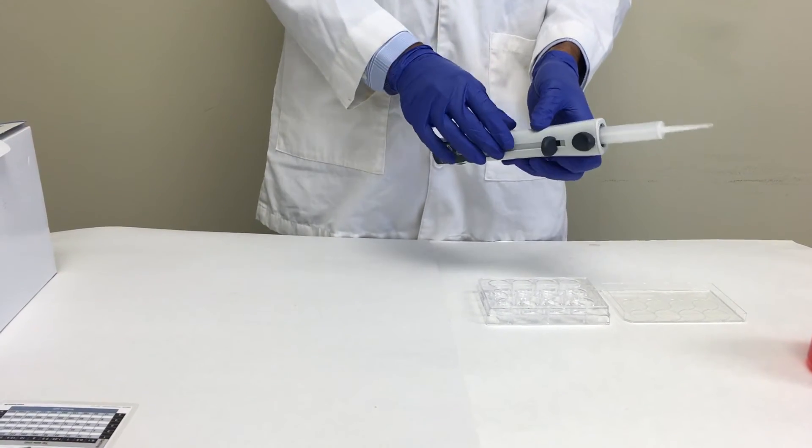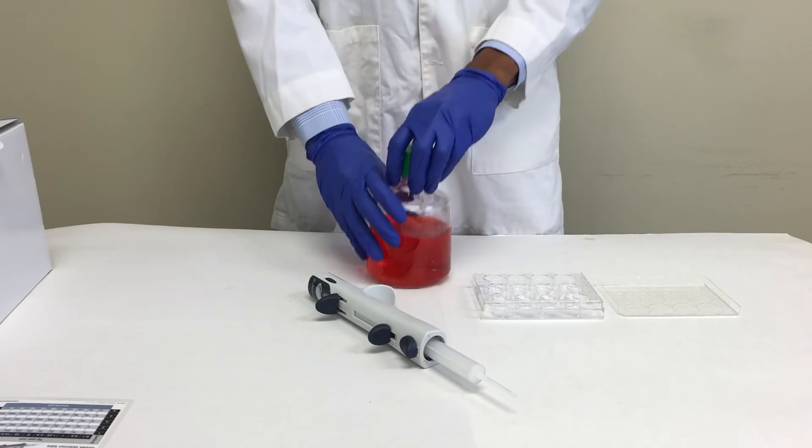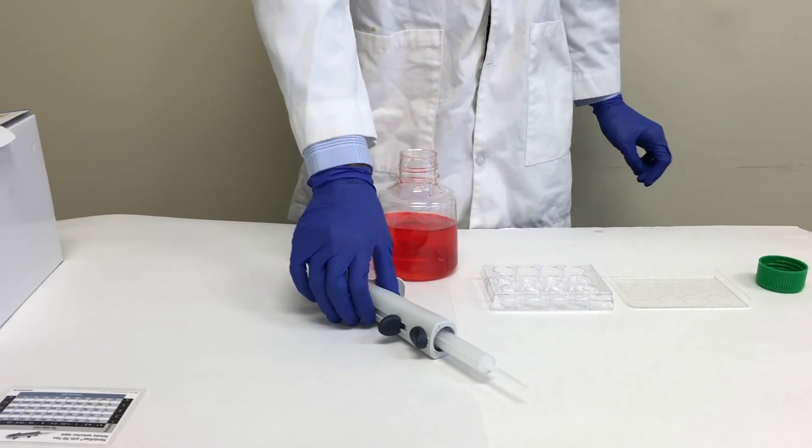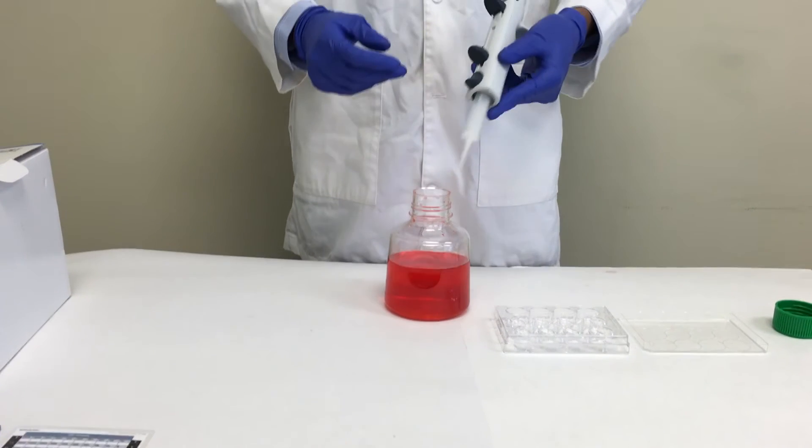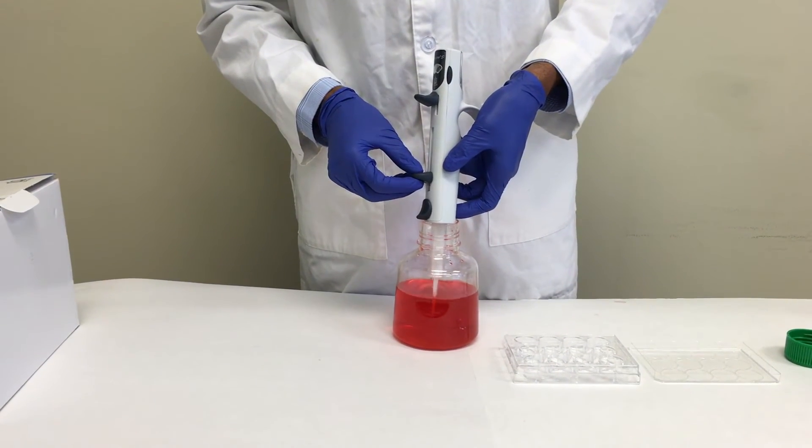When you are ready to start filling up the syringe, bring your bottle close to you. Make sure you insert the tip into the liquid, enough for it to fill up. Then, slowly raise the filling lever until your syringe fills up to the top.